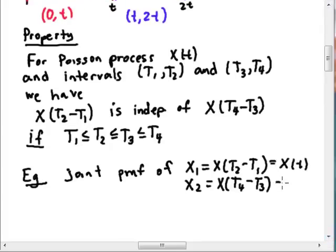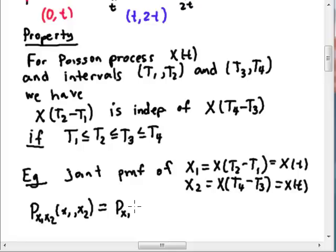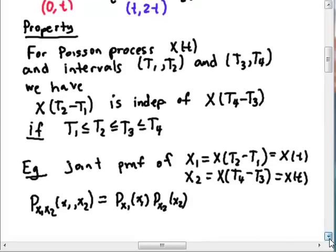So when I write the joint PMF, it's going to be P of X1, X2, X1, X2, and it's going to be the product of the two, P of X1 of X1 and P of X2, X2, because they're independent.